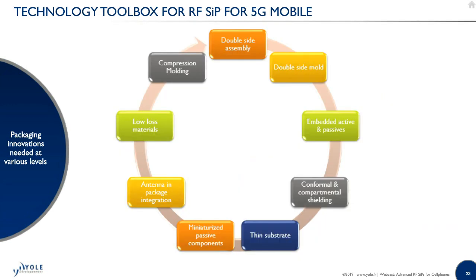The technology toolbox for RF SiP for 5G mobile includes: dual-side assembly and dual-side molded package; more embedded active and passive components; both conformal and compartmental shielding; thin substrate with smaller passive components; for millimeter wave, antenna integrated inside the package; low-loss material needed for high-frequency signal propagation; and more compression molding.